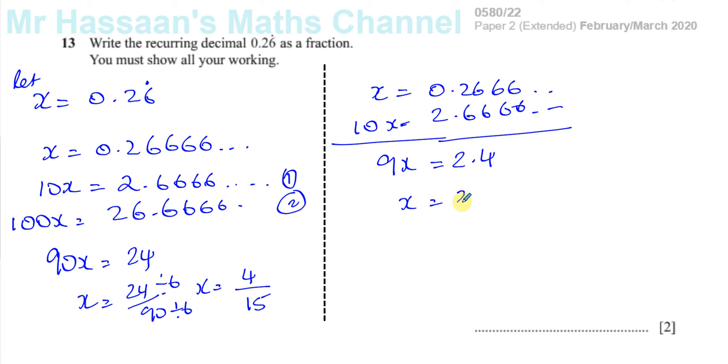So you have 9x equals 2.4, so x equals 2.4 over 9, which then, obviously, we can't leave a fraction like this. You have to multiply both by 10. That gives you 24 over 90, which then also goes down to 4 over 15.